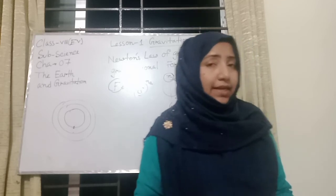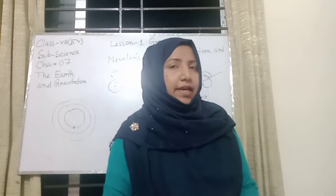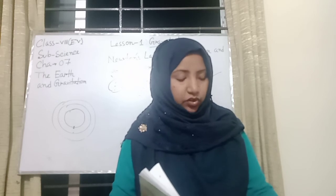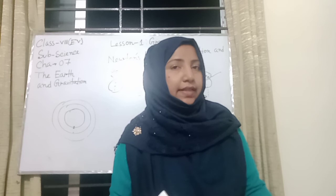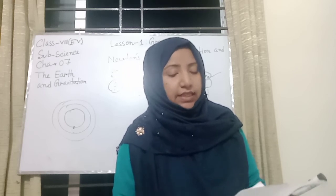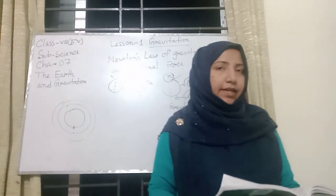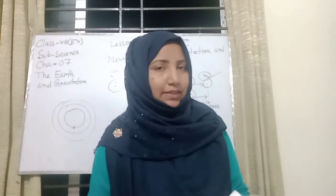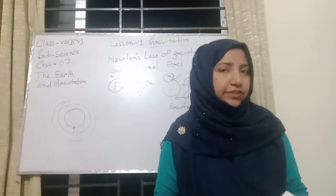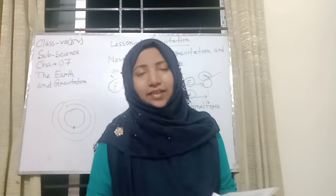Today I have just also selected the physics-based structure. The title is The Earth and the Gravitation. We also know about Newton's theory. The force is equal to G times M1 times M2 divided by D squared. F is the force, G is the gravitational constant, M1 is the first mass, M2 is the second mass, and D squared is the distance squared. Today I have just finished these topics. Thank you, my dear students. Bye.